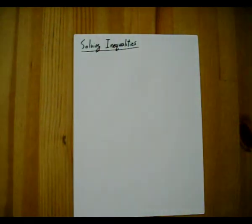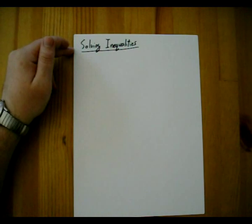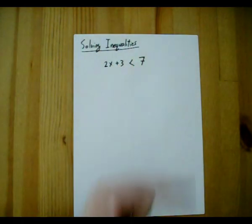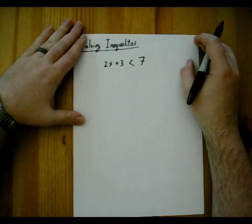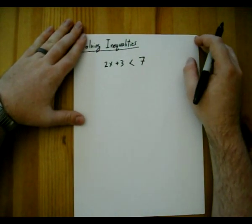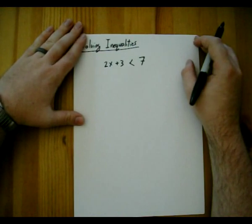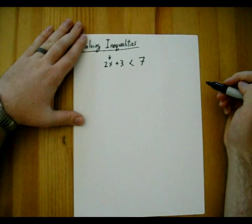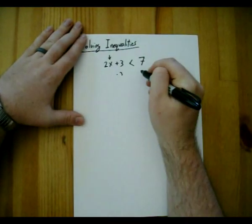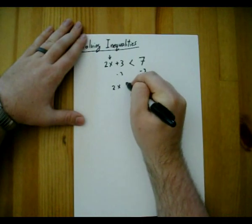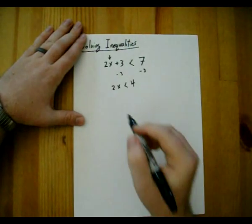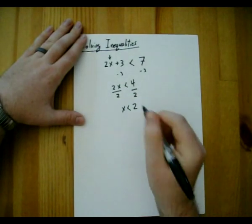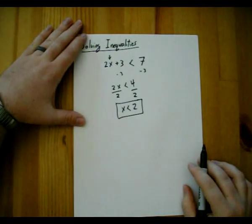Now that we've looked at inequalities, we're going to try to solve some of them. Here we have 2x + 3 < 7. We solve these the same way we solve equations. First, subtract 3 from both sides to get 2x < 4. Then divide by 2 to isolate x, and we get x < 2. That's our answer — we've solved the inequality.